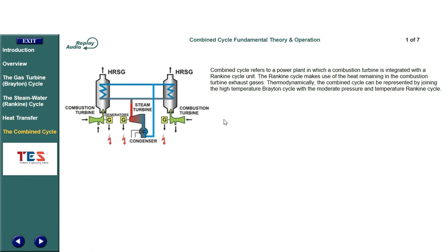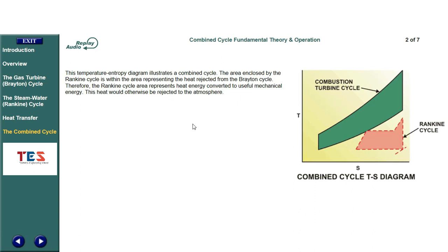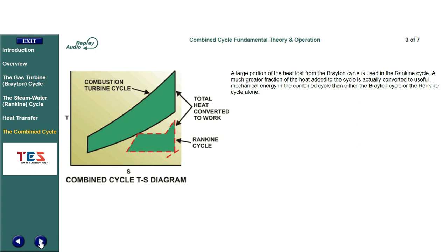Combined cycle refers to a power plant in which a combustion turbine is integrated with a Rankine cycle unit, which makes use of the heat remaining in the combustion turbine exhaust gases. Thermodynamically, the combined cycle can be represented by joining the high temperature Brayton cycle with the moderate pressure and temperature Rankine cycle. The area enclosed by the Rankine cycle on the temperature-entropy diagram is within the area representing the heat rejected from the Brayton cycle. Therefore, the Rankine cycle area represents heat energy converted to useful mechanical energy — heat that would otherwise be rejected. A much greater fraction of the heat added to the cycle is converted to useful mechanical energy in the combined cycle than in either the Brayton cycle or the Rankine cycle alone.